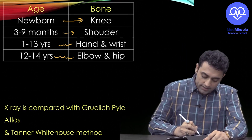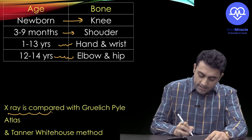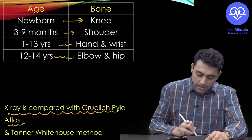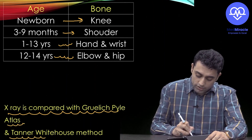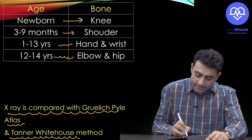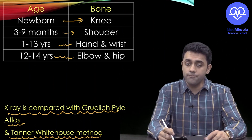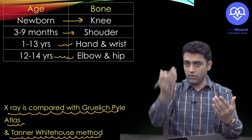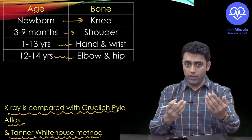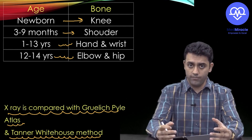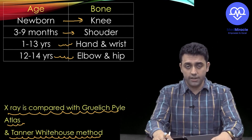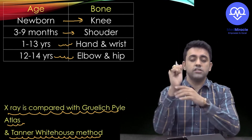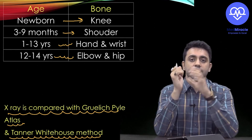After obtaining the X-ray, you compare it with the Greulich-Pyle atlas chart or the Tanner-Whitehouse method chart to determine whether the bone age is normal. This comparison tells you whether bone development is appropriate for the child's age.